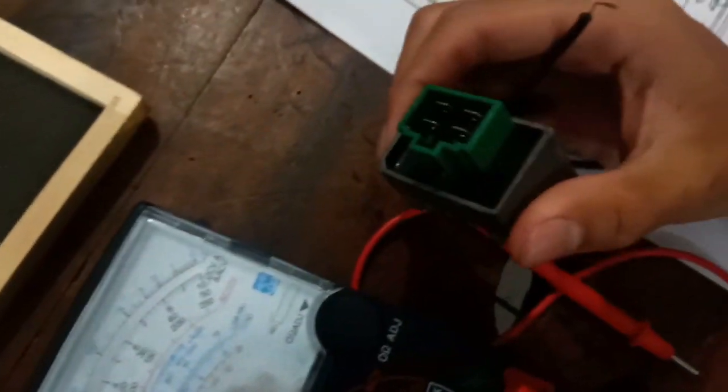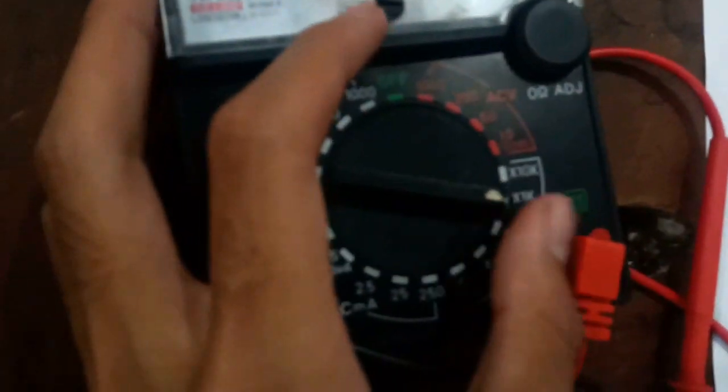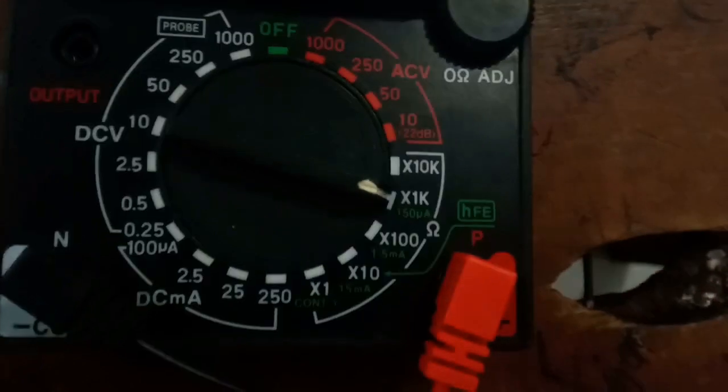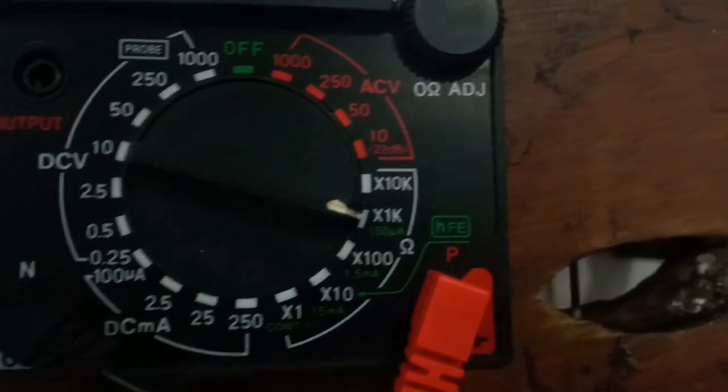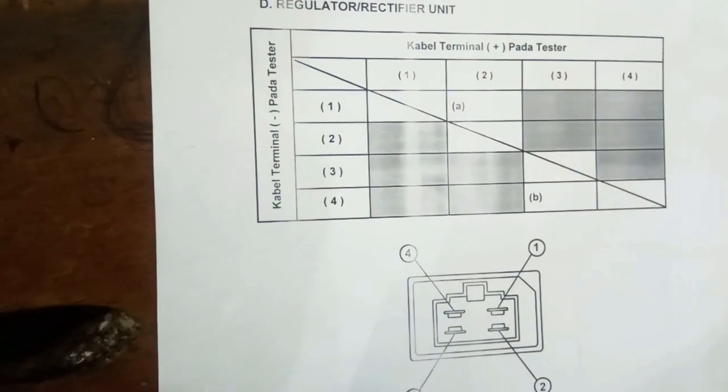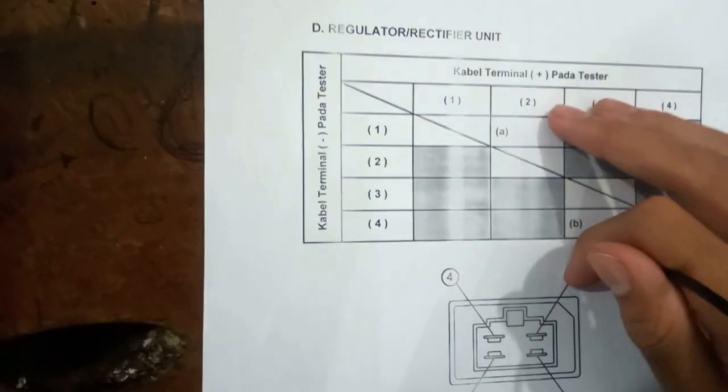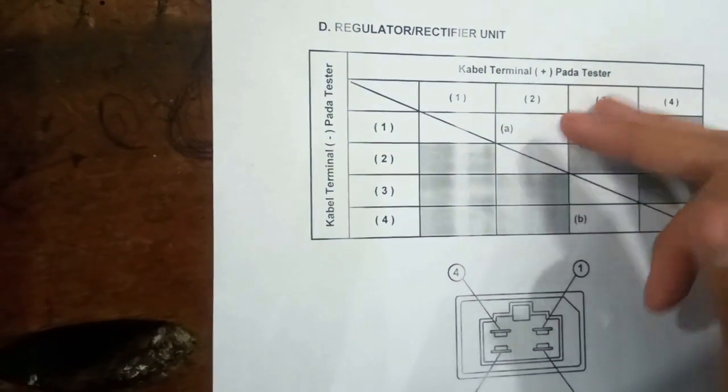Sekarang kita ganti ke pengukurannya adalah kiprok ya. Kiprok dan selektor tetap angka x1k ya, nggak berubah. Ini ada manual booknya, jadi kita lebih dipermudahkan lagi. Coba kita ukur lektor nomor A ya.